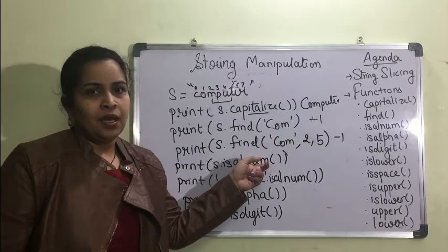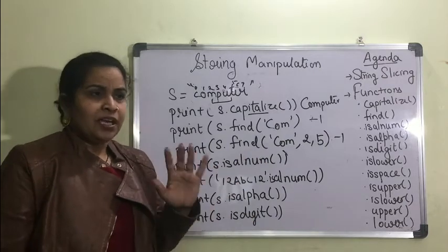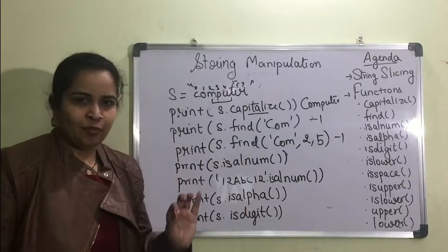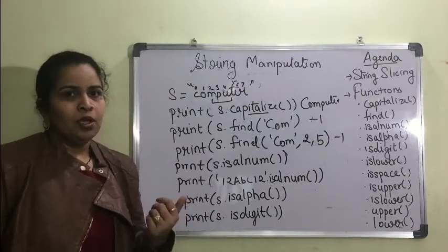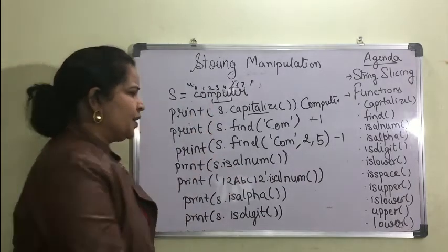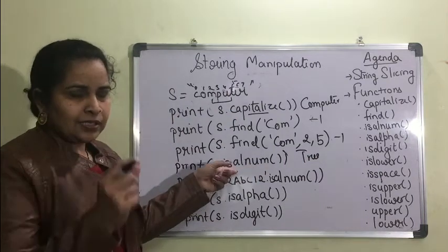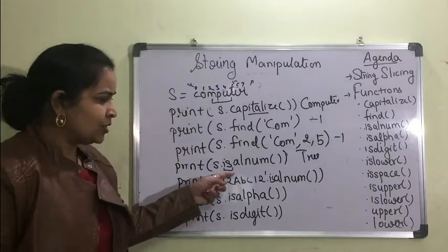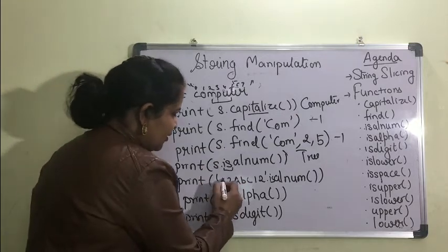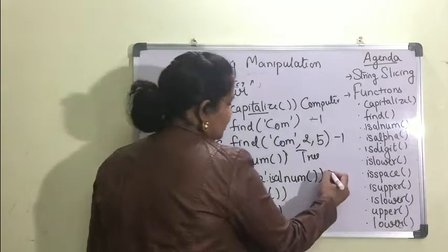The next function is s.isalnum() — 'alnum' stands for alphanumeric. Alphanumeric means the string contains only characters or numbers, with no special characters like spaces, hyphens, or underscores — only alphabets A-Z (upper or lower) or digits 0-9. Since 'abc123' contains both alphabets and numbers, it will return True.